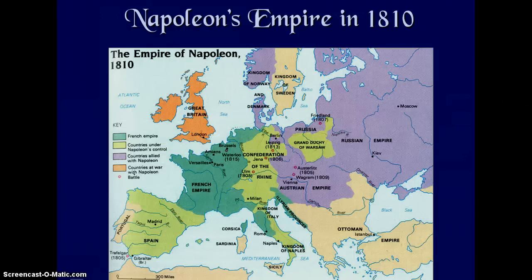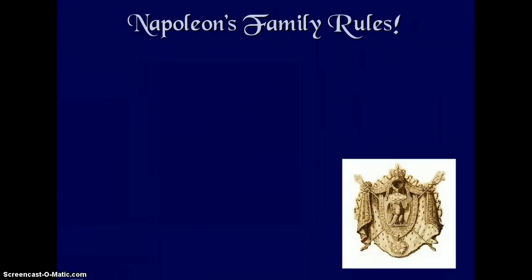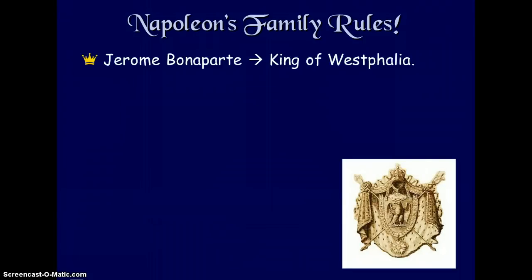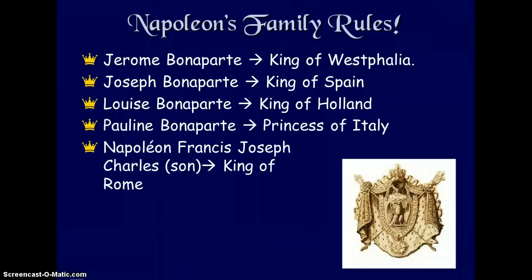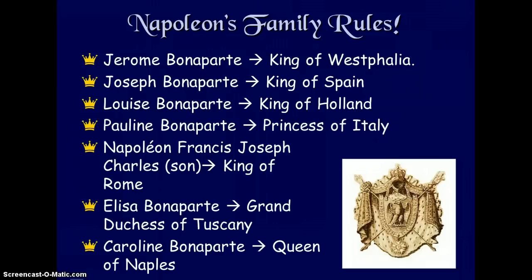Napoleon's empire in 1810 shows the French empire in green, with countries controlled by Napoleon in lighter green. Countries allied with Napoleon included Norway, Denmark, Russia, Prussia, and the Austrian Empire, while Britain remained at war with Napoleon. Napoleon placed his relatives into power across Europe in order to maintain complete control.